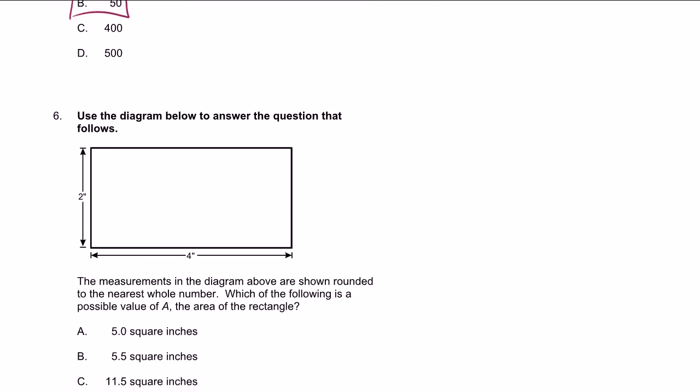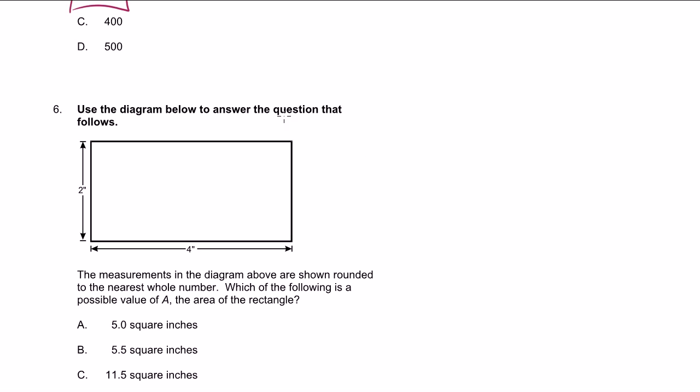Problem 6. Use the diagram below to answer the question that follows. The measurements in the diagram above are shown rounded to the nearest whole number. Which of the following is a possible value of A, the area of the rectangle? So what they're saying is that these numbers, these aren't the actual values if we were to be precise about it. They just rounded them to the nearest whole number. When you just multiply these two things to figure out the area, you get an area of 8 square inches.